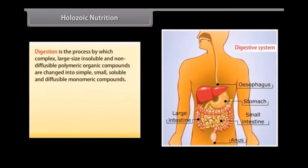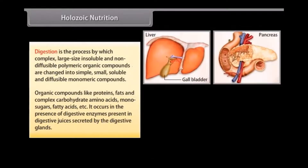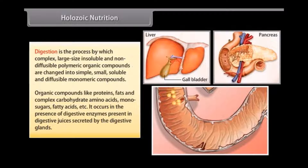Digestion is the process by which complex, large-size, insoluble and non-diffusible polymeric organic compounds are changed into simple, small, soluble and diffusible monomeric compounds. Organic compounds like proteins, fats, and complex carbohydrates are broken down into amino acids, monosugars, and fatty acids, etc. It occurs in the presence of digestive enzymes present in digestive juices secreted by the digestive glands.